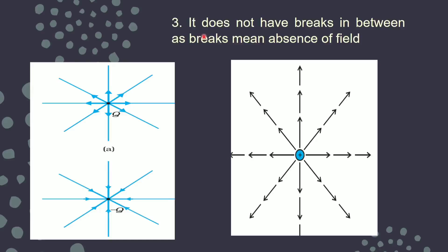Next property says field lines do not have breaks in between — they have to be continuous. A line starts from the positive charge ending at infinity and cannot have breaks, because breaks would mean absence of the electric field. The field is decreasing with increase in distance; it becomes weak as you go to infinity, but it will never have breaks in between.